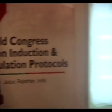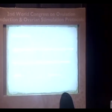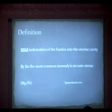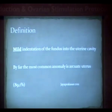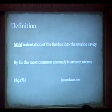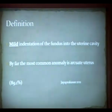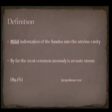As a definition, arcuate uterus is defined as a mild indentation of the fundal part of the uterus into the uterine cavity. Its prevalence is by far the most common anomaly among all Müllerian abnormalities. The American Society considers arcuate uterus as a variation of normal anatomy, with either no or minimal adverse effect on reproductive outcome.